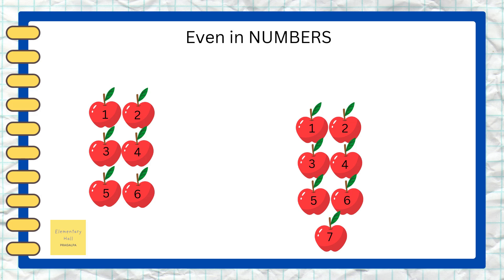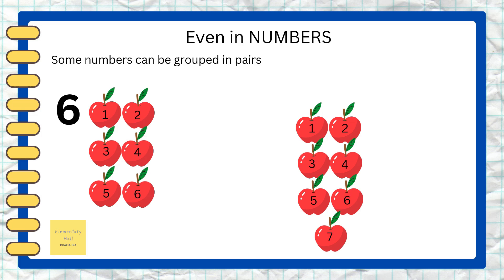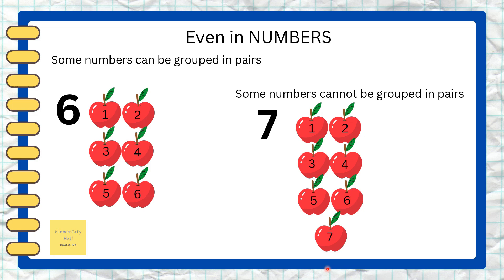Even in numbers, some numbers can be grouped in pairs. Like number six — look, there are six apples and they are grouped in pairs. And some numbers cannot be grouped in pairs, like number seven.